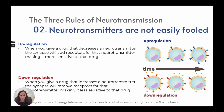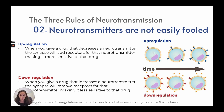The second rule is that neurotransmitters are not easily fooled. They do this through upregulation and downregulation. Upregulation is when you give a drug that decreases a neurotransmitter — the synapse will add receptors for that neurotransmitter, making it more sensitive to that drug. So if we decrease the neurotransmitter, they are going to add more receptors, making it more sensitive.